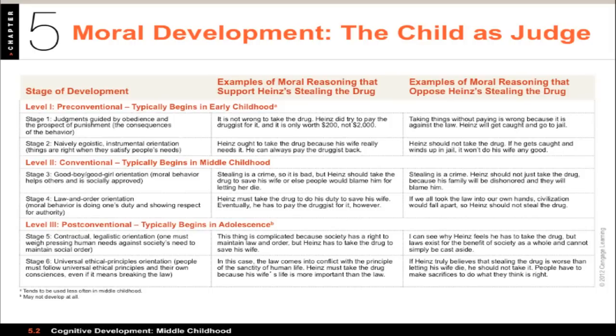A situation comes up where it would be very easy for Heinz to steal the drug for his wife. If Heinz steals the drug, his wife lives; if he does not, his wife dies. What Kohlberg would ask is whether Heinz should steal the drug or not — but what was really of interest was why they said he should do what he should do. Kohlberg said moral reasoning generally follows the same sequence in children, can progress at different rates, and not everyone reaches the highest stage.